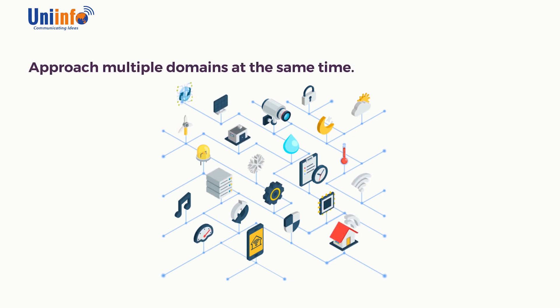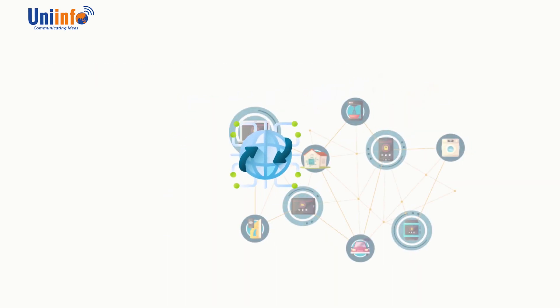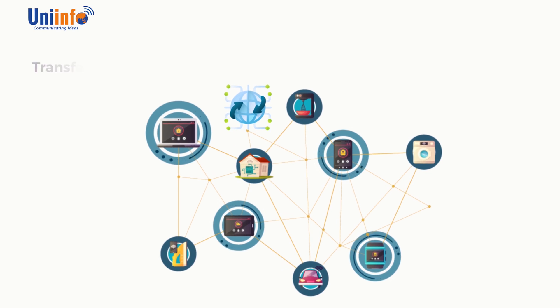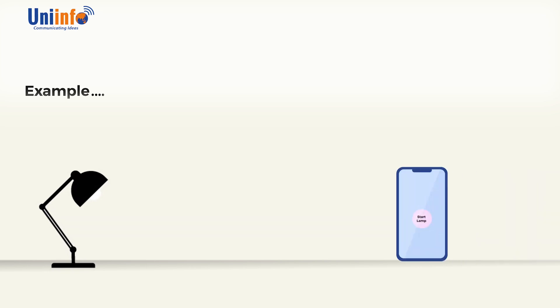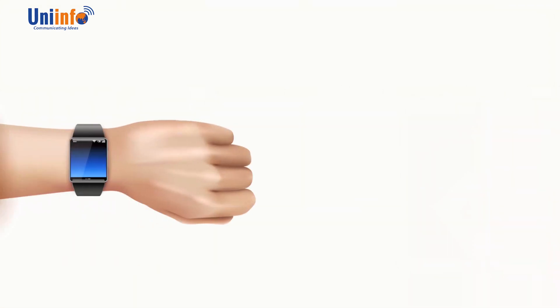By bringing various technologies and sensors on the same platform, IoT has made it possible to approach multiple domains at the same time. But IoT is only possible with the internet, and so the internet acts as a medium to transfer information from various sources in various formats to possible destinations. A very simple example of IoT can be seen around us when someone controls a light bulb using their mobile phone.